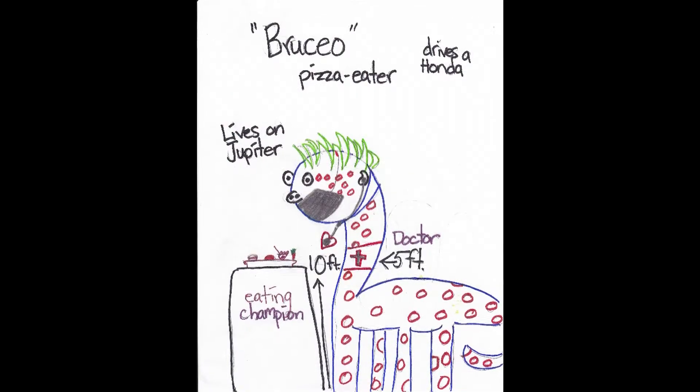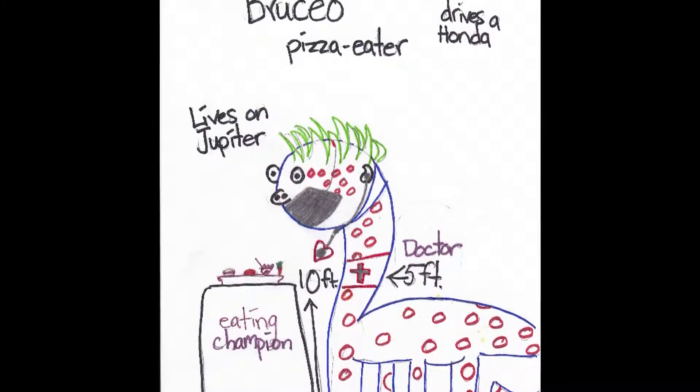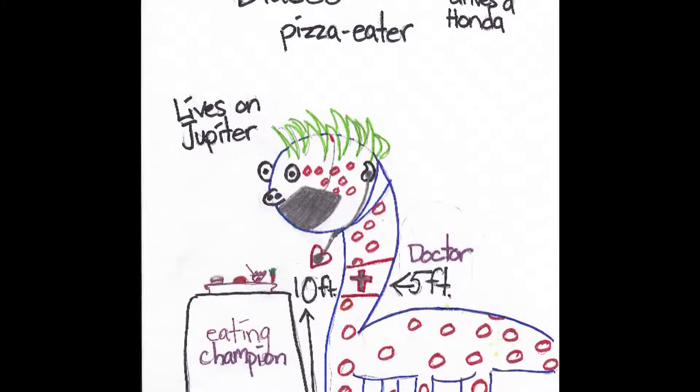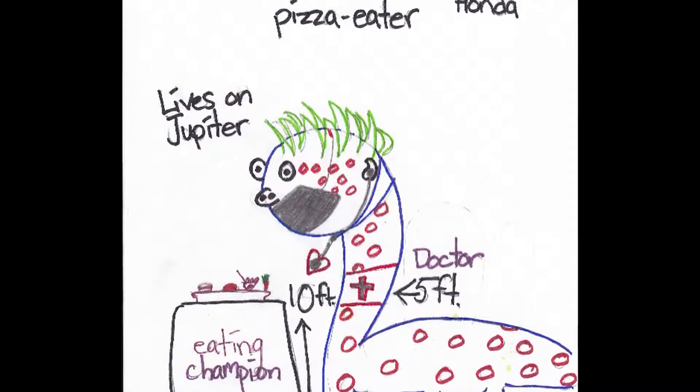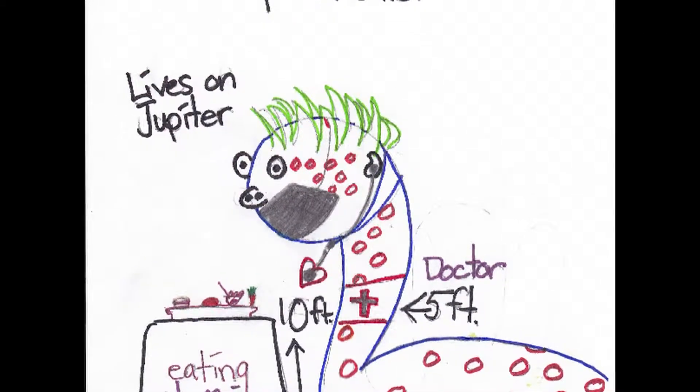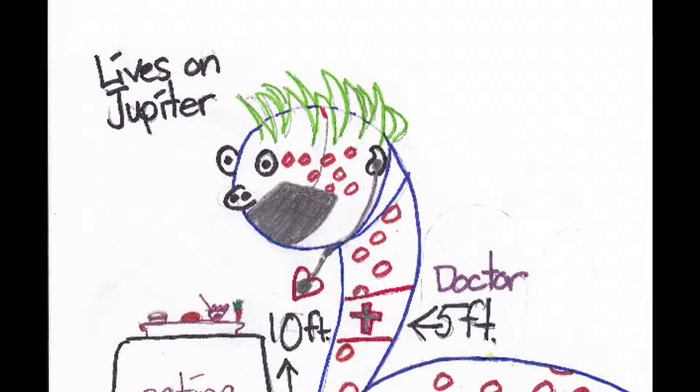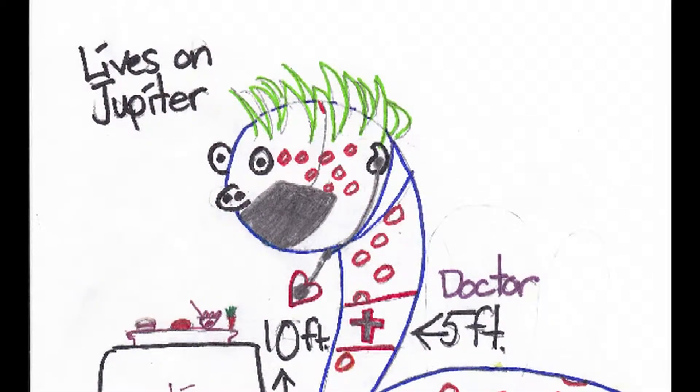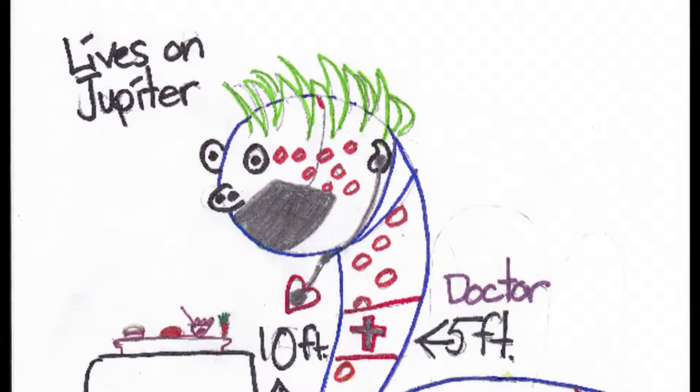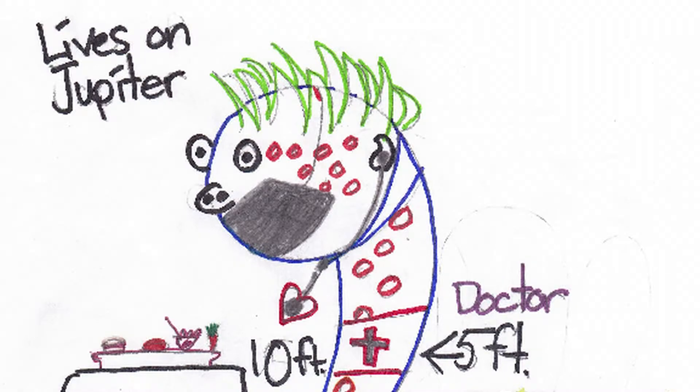I think this is either a six, a nine, or a two. Brucio, the pizza eater. He drives a Honda, lives on Jupiter. He is exactly ten feet tall and five feet wide, at least. And he's a doctor, and he's also an eating champion. I think the medal around his neck is probably his medal for being such a good eating champion. His mouth's pretty big. I like his green hair.